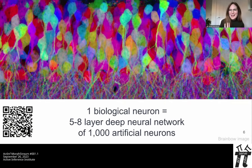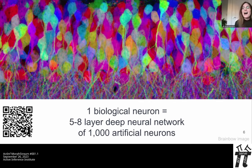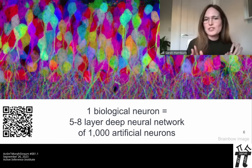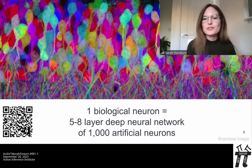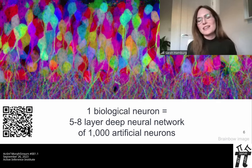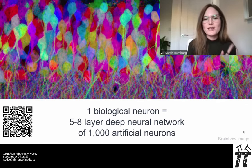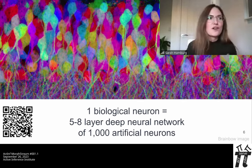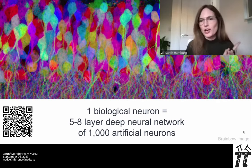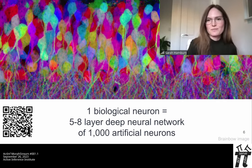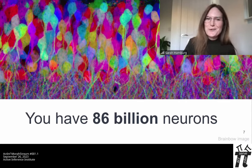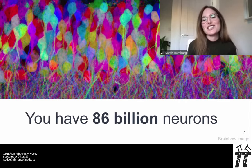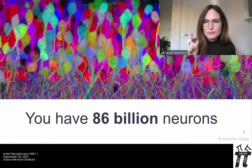How does your brain compare to AI? Modern AI is already brain-inspired. However, artificial neurons are highly simplified and don't capture the complexity of biological neurons or networks — not even close. Individual neurons are actually more like networks themselves. Research suggests that modelling one biological neuron requires a five-to-eight-layer deep artificial neural network made of around 1,000 artificial neurons. You have 86 billion neurons in your brain.